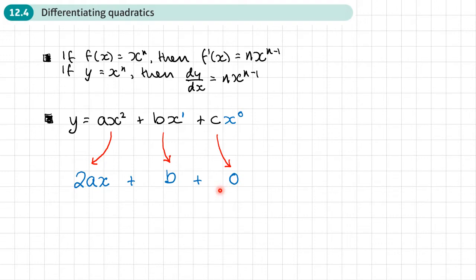So by looking at this, we can see three things that happen. The first thing is this. Any x squared term, after we differentiate it, becomes an x term. So we started with x squared. It became an x term.